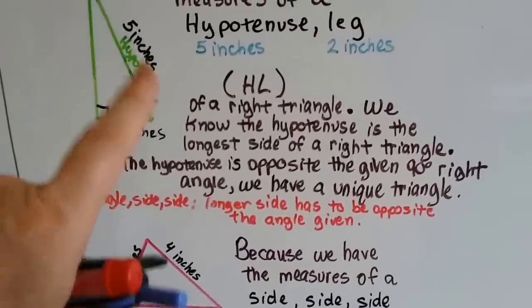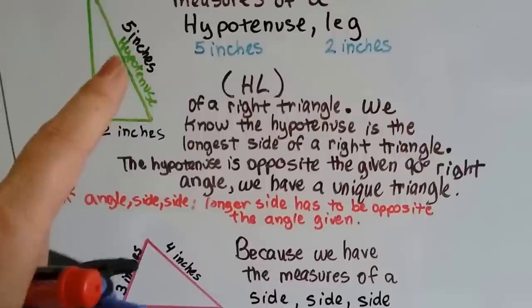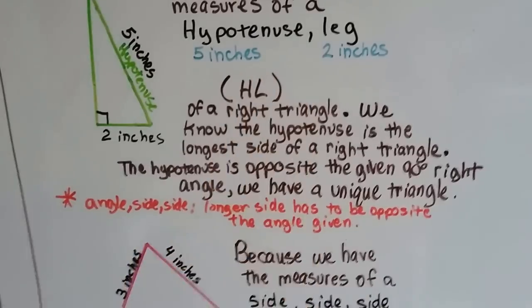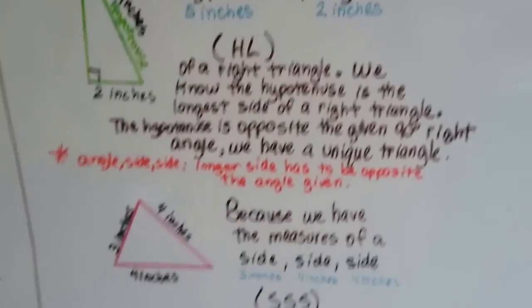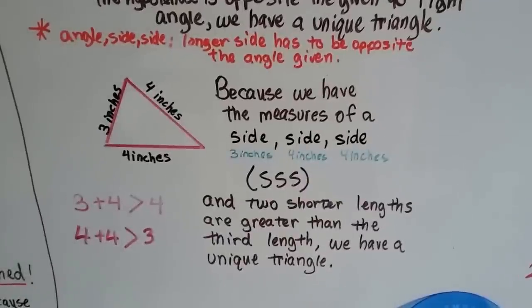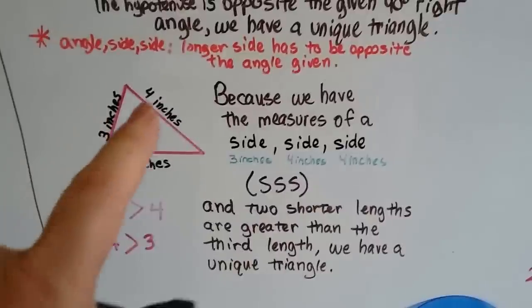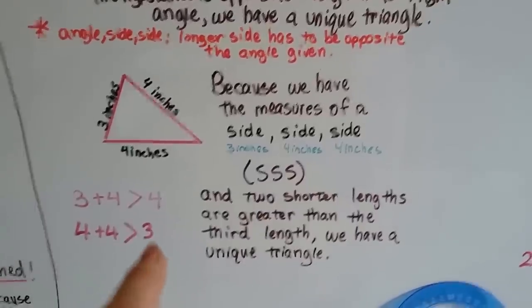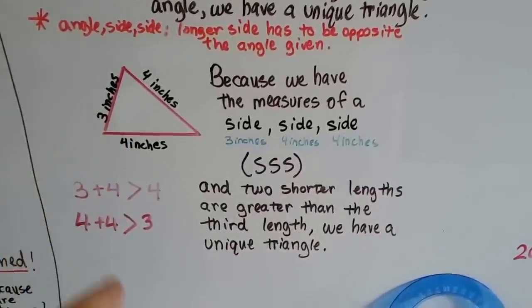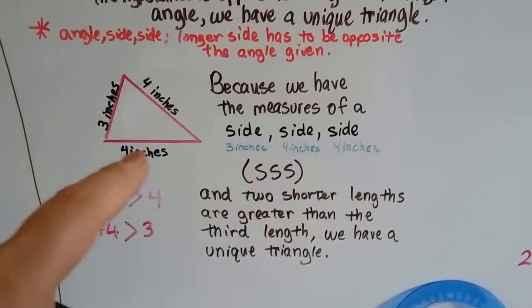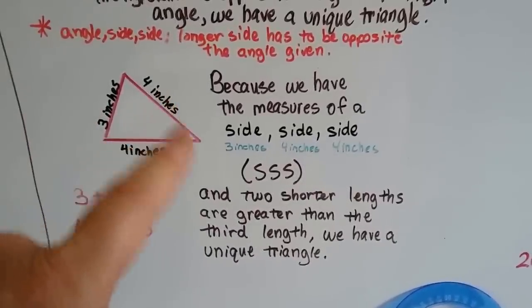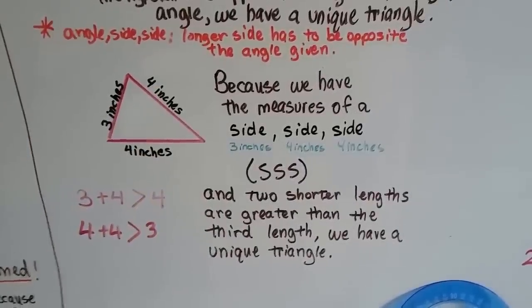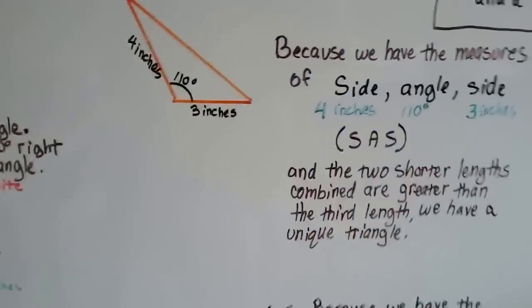This is like angle-side-side, but the longer side — the hypotenuse — has to be opposite the given angle of 90 degrees. We call it HL. For side-side-side (SSS): three inches, four inches, four inches — the two shorter lengths are greater than the third. Three plus four equals seven, which is greater than four, and four plus four equals eight, which is greater than three. So that's a unique triangle.